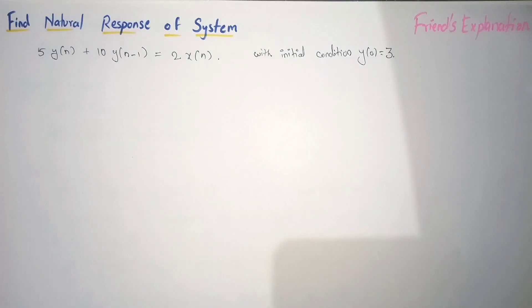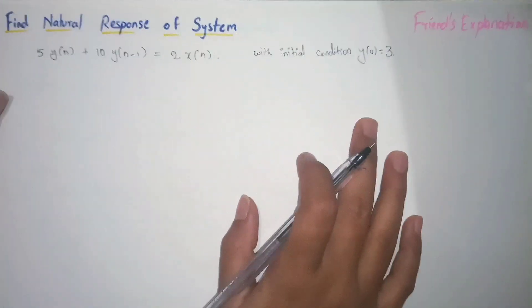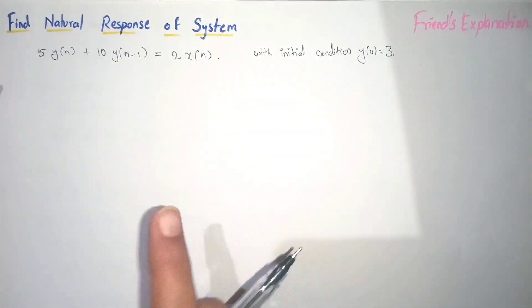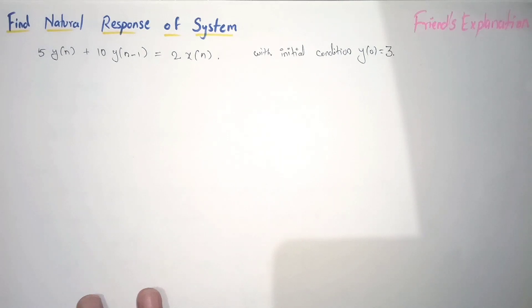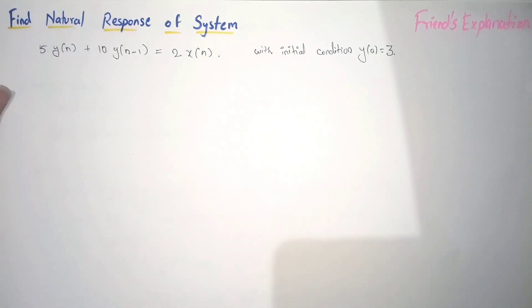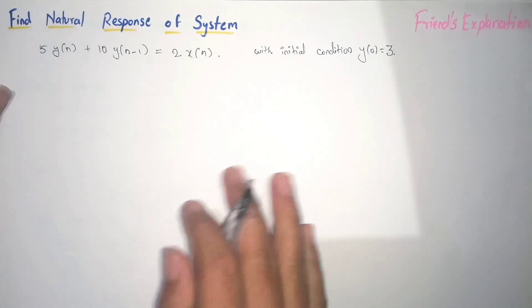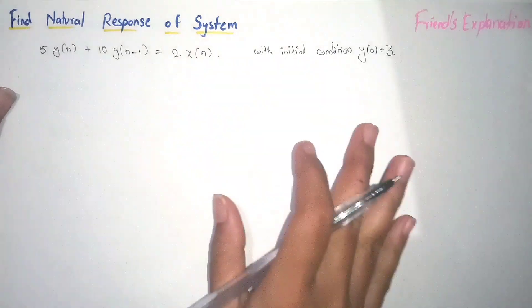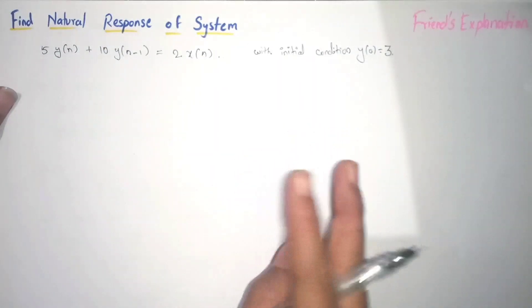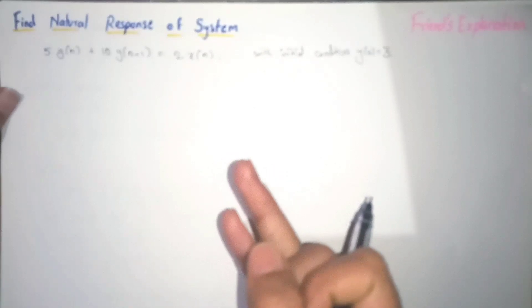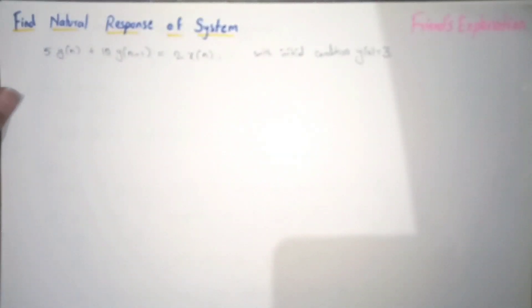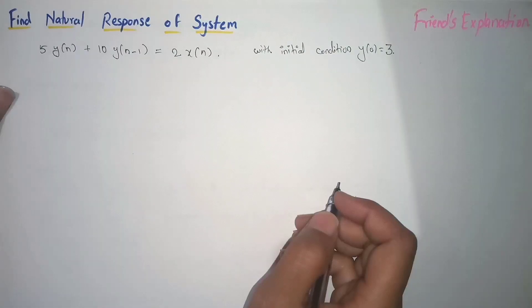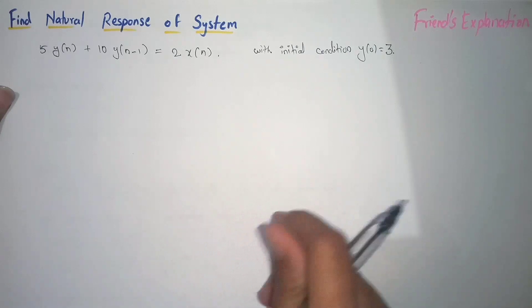Hello guys, welcome back to the channel. In this video we are going to find the natural response of the system where the roots are real — specifically only one real root. We will find out how we can write the homogeneous equation of this system if the roots are only real. I have already discussed two conditions — real and repeated, and real and non-repeated (discrete) — in previous videos, so watch those first.